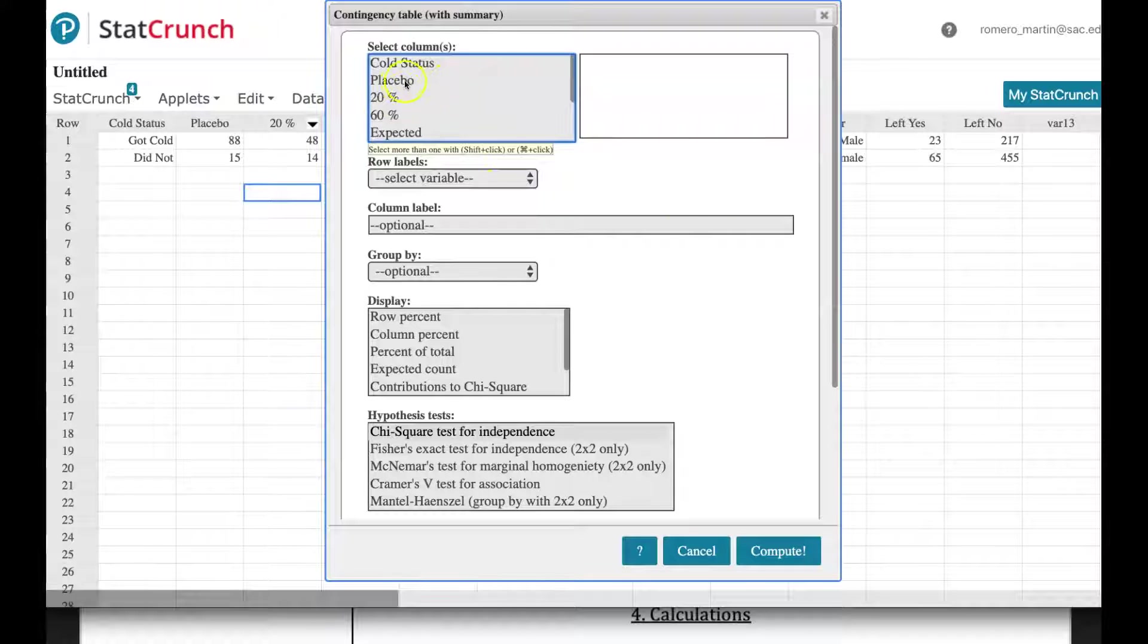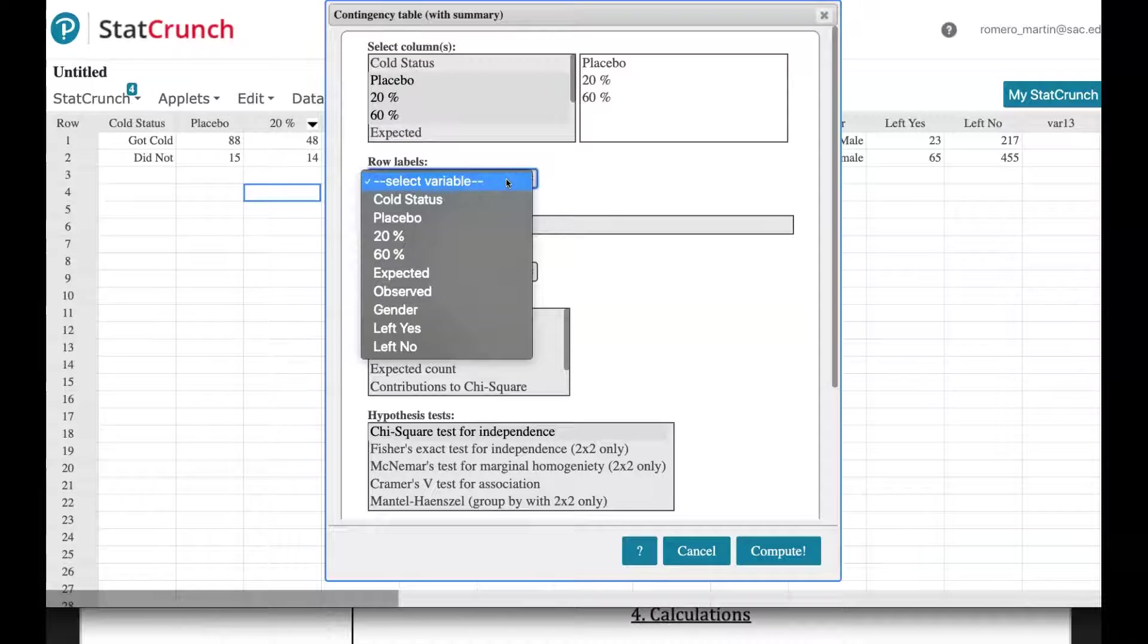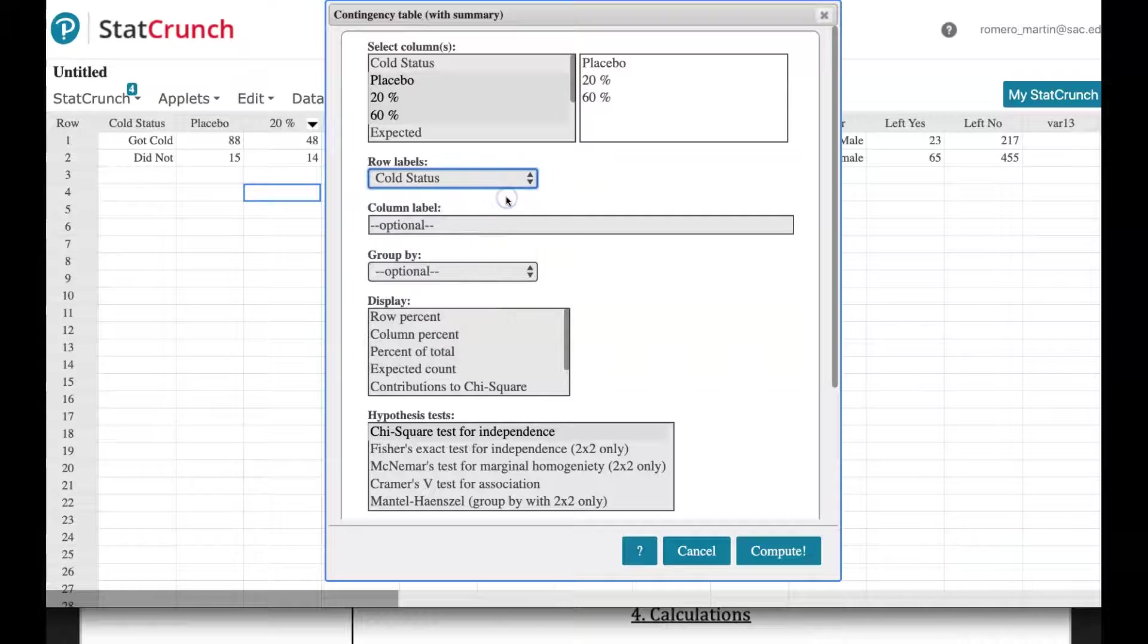And so the columns are the placebo, 20%, 60%. The row labels are the ones on the left side, the ones that are going across. That's our cold status. Did you get the cold or not? And that's it.